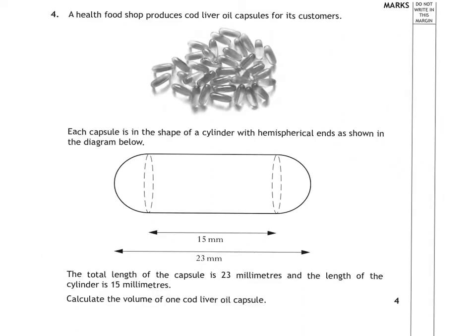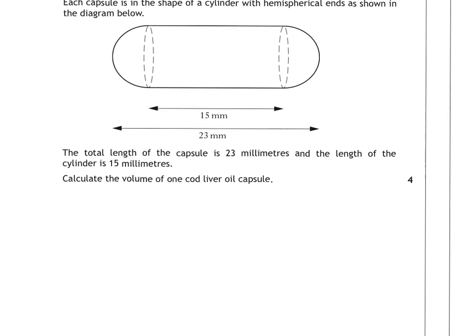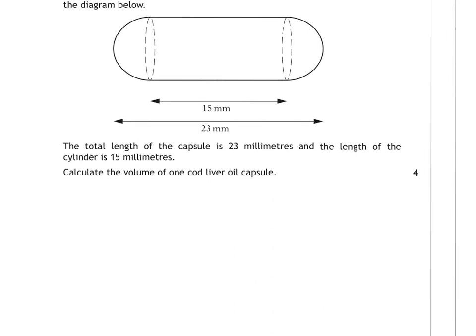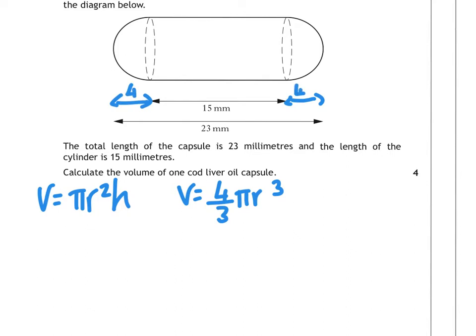This is, we have a capsule, a medicine capsule, and we have to find the total volume. So first thing is identifying what shapes have we got going on here. We have a cylinder in the middle, so a cylinder is volume equals pi r squared h. And then we've got two hemispheres, but two hemispheres put together make a full sphere. From here to here and here to here, 23 take away 15 is 8, so each of these wee bits must be 4. Now, that means that the radius here is 4, but that also means that the radius there is 4.